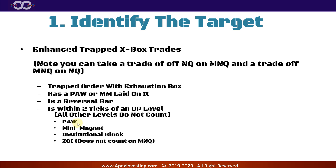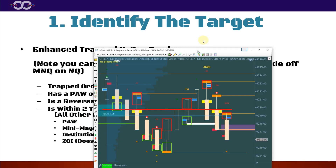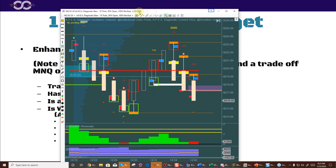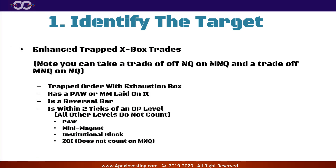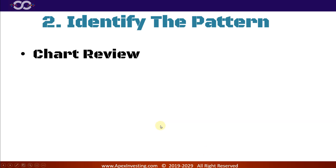So the complete rule: X Box with trapped order, with a paw or mini magnet on it, on a reversal bar, within two ticks of an existing paw, existing mini magnet, existing institutional block, or existing Zeal Eye — meaning one that already existed before this bar. The orange paw print line tells you if a paw already existed. You might want to take a screenshot of this and save it.